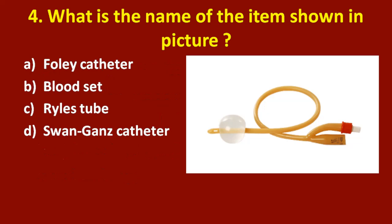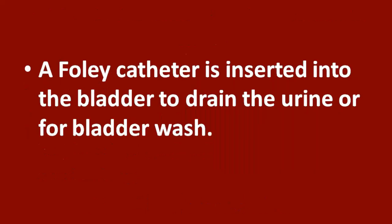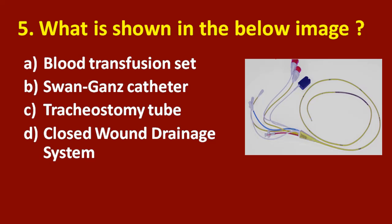Fourth question: what is the name of the item shown in the picture? Option A: Foley catheter. Option B: blood set. Option C: Ryle's tube. Option D: Swan-Ganz catheter. The correct answer is option A, Foley catheter. A Foley catheter is inserted into the bladder to drain the urine or for bladder wash.